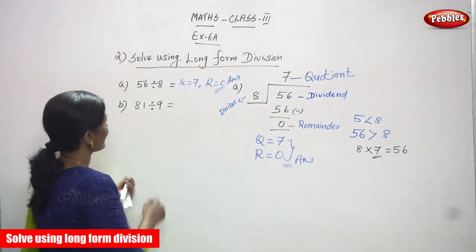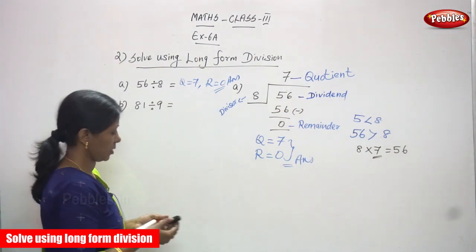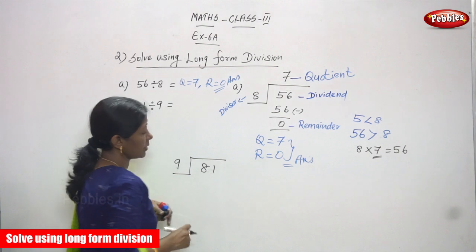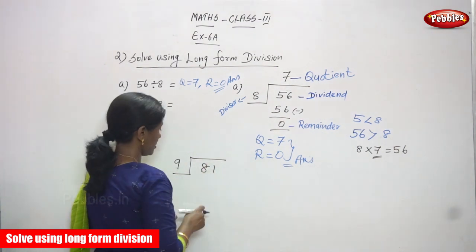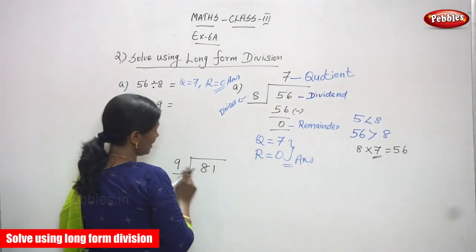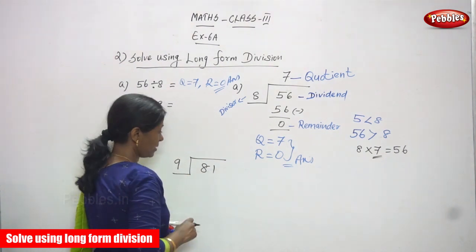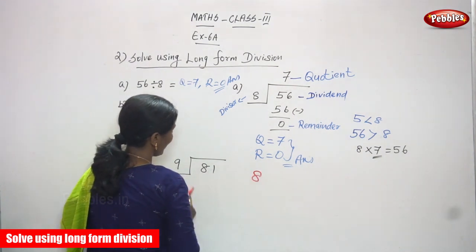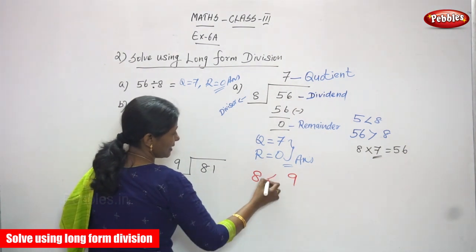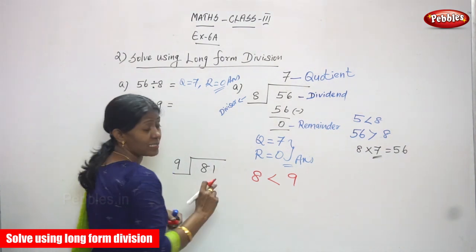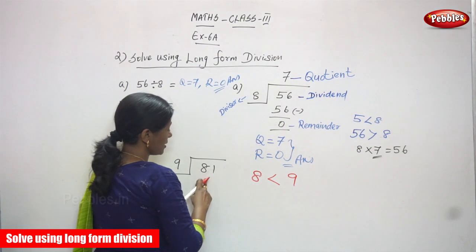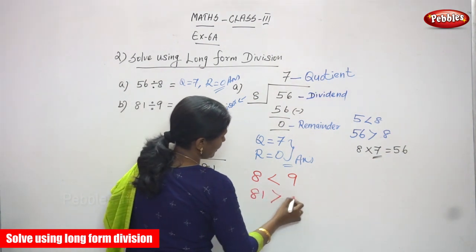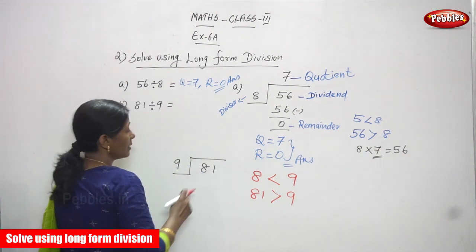Now we are going to do the second sum: 81 divided by 9. 81 is a double-digit number and 9 is a single-digit number. First you have to compare 8 with 9. 8 is less than 9, so you should not consider the place value — only the numbers. Since 8 is less than 9, you move on to the next digit. 81 is greater than 9, so 81 is enough to divide.